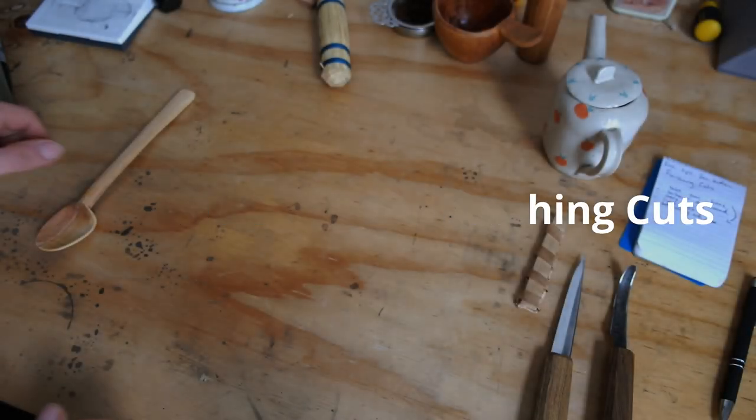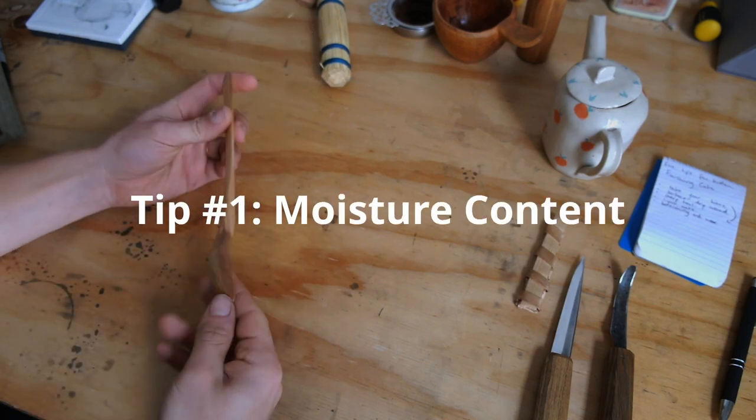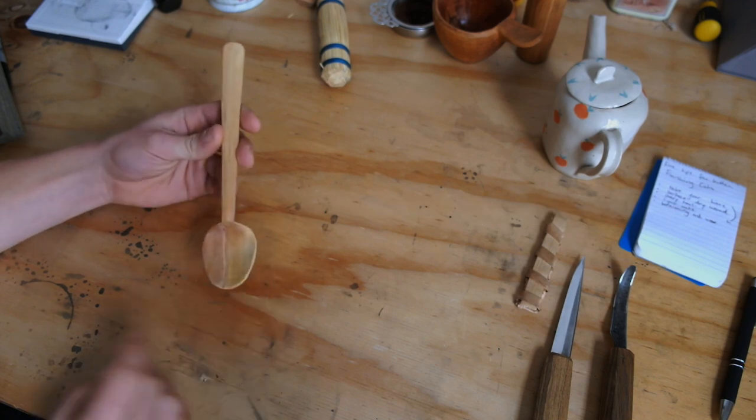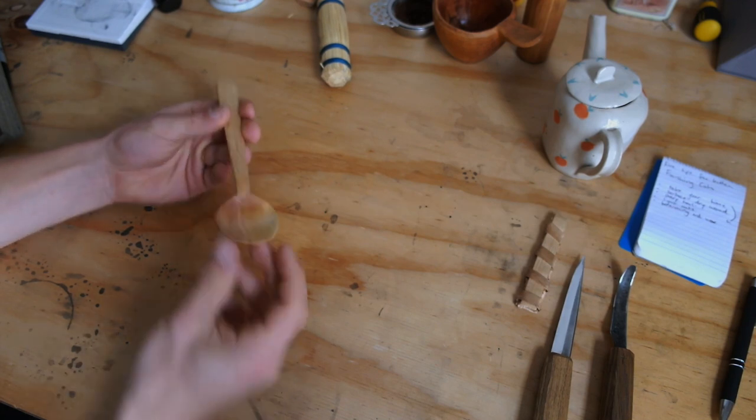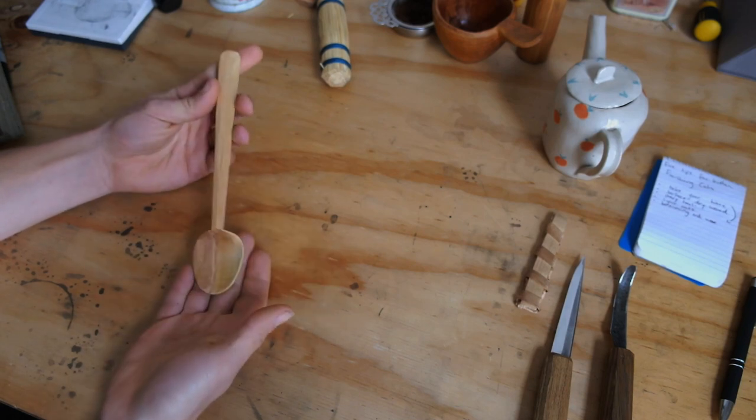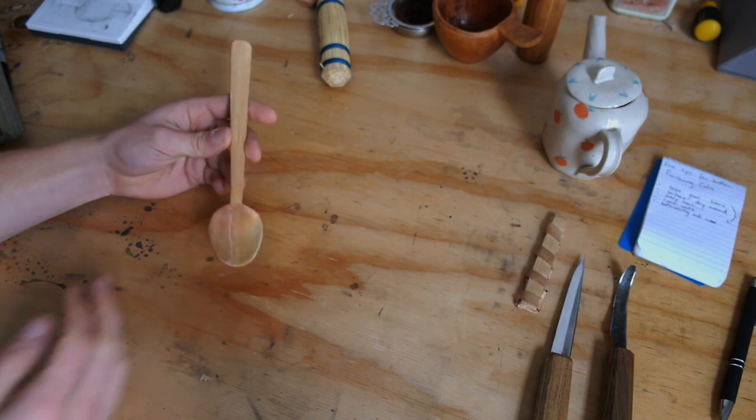Alright, so let's talk about finishing cuts. First thing you want to do is finish your spoon 90% done before you let it dry. It's going to achieve a few things. A spoon that is nice and thin and to the final shape by the time you leave it to dry is going to have less risk of cracking and it's also going to dry quicker.